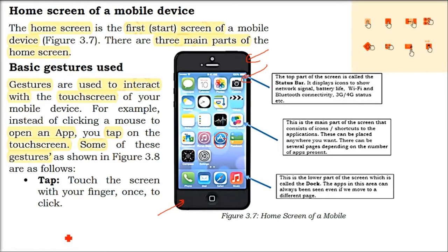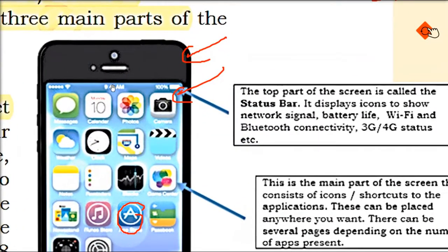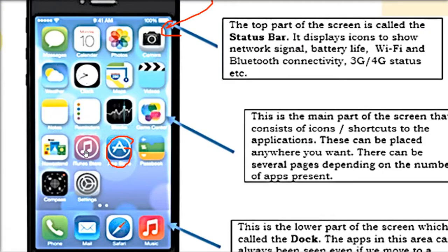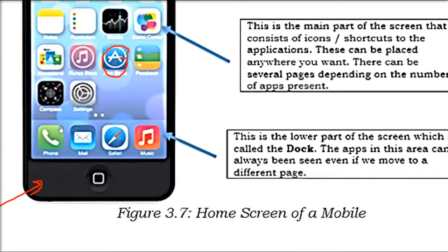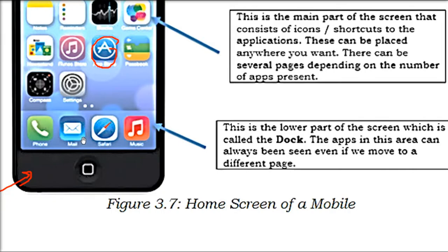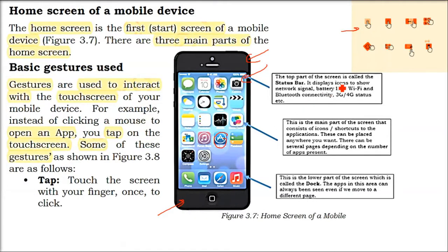There are three parts of the home screen. At the top is the Status Bar, which displays icons showing network signal, battery life, Wi-Fi connection, Bluetooth connection, and mobile data services like 3G, 4G, HSPA, or H+. In the middle is the main screen area with all the icons and shortcuts — you can navigate through different pages and move icons. The lower part is called the Dock. Apps in the dock can always be seen even when you move to a different page.